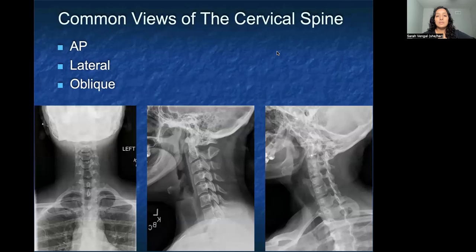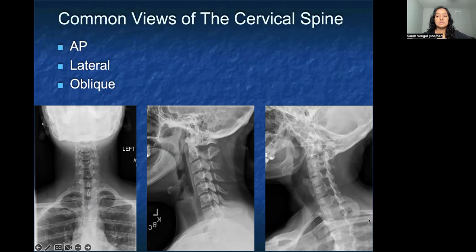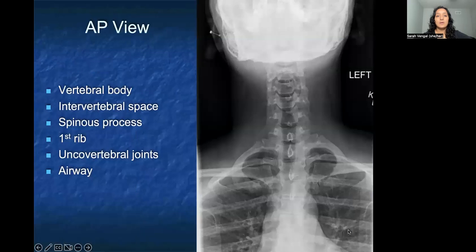The three most common views of the cervical spine that are obtained are the AP, looking at the patient from front to back; the lateral, looking at the patient from the side; and the oblique, in which the patient is turned a little bit so that you can actually see more foramen.